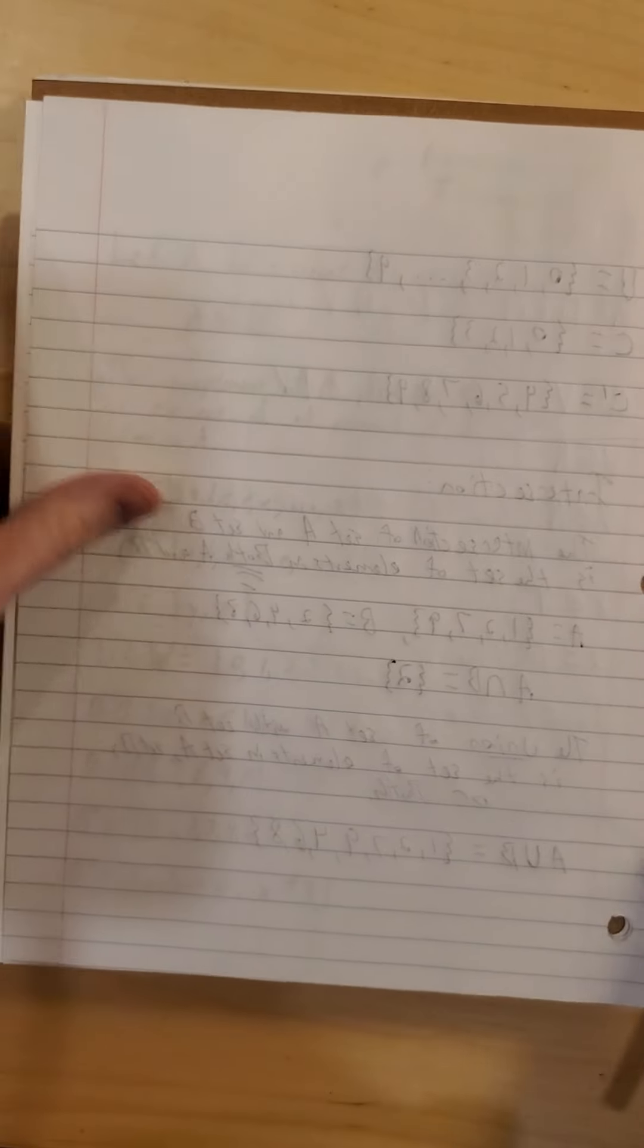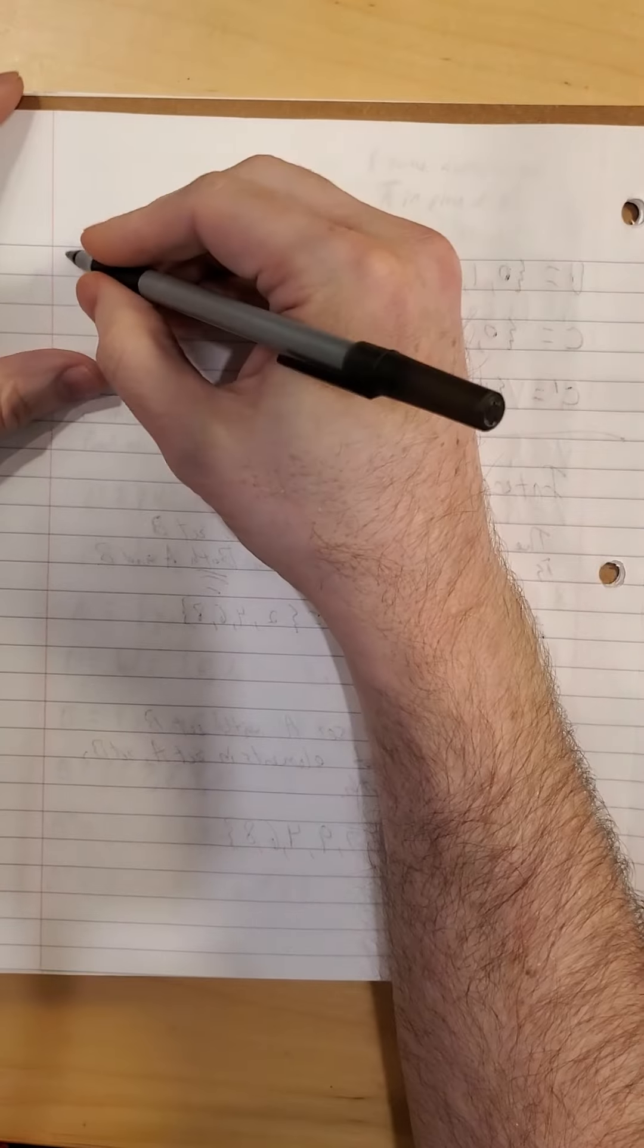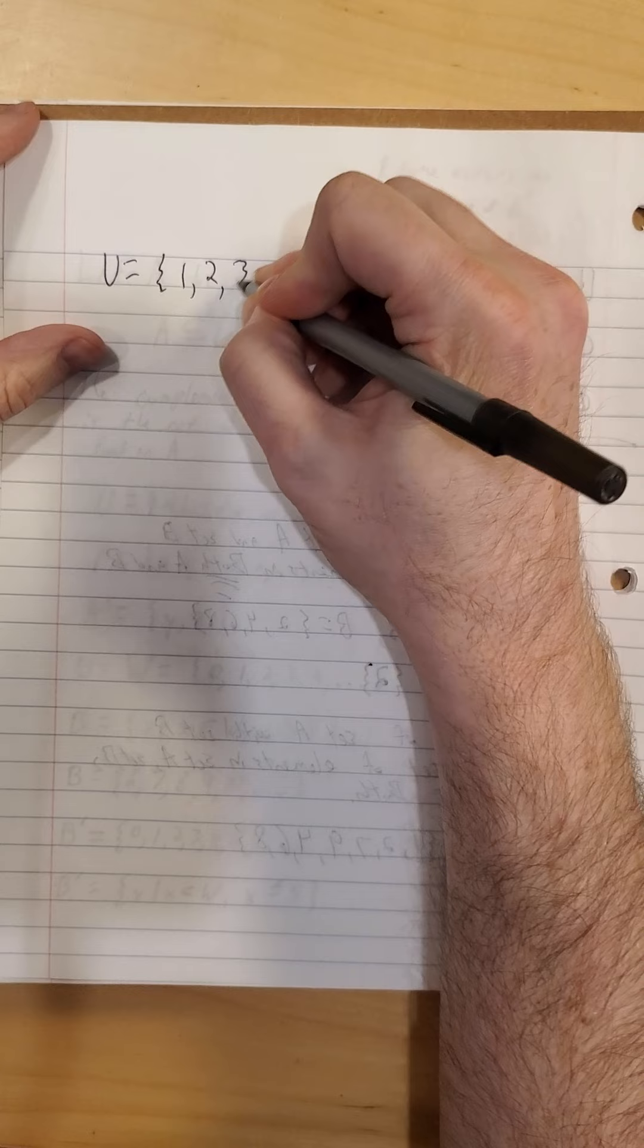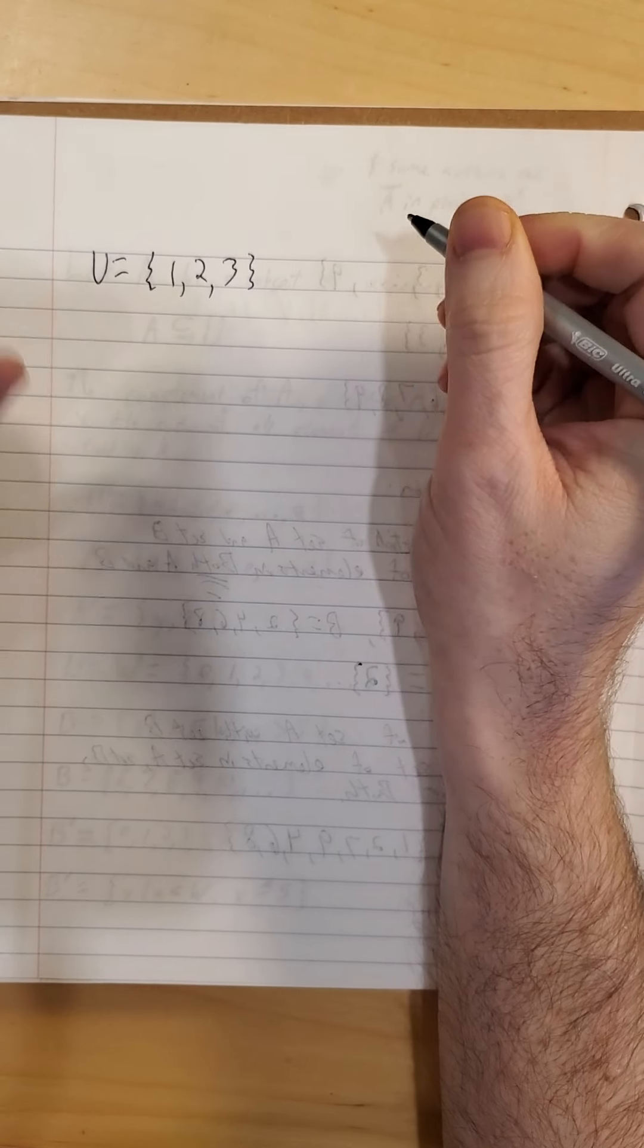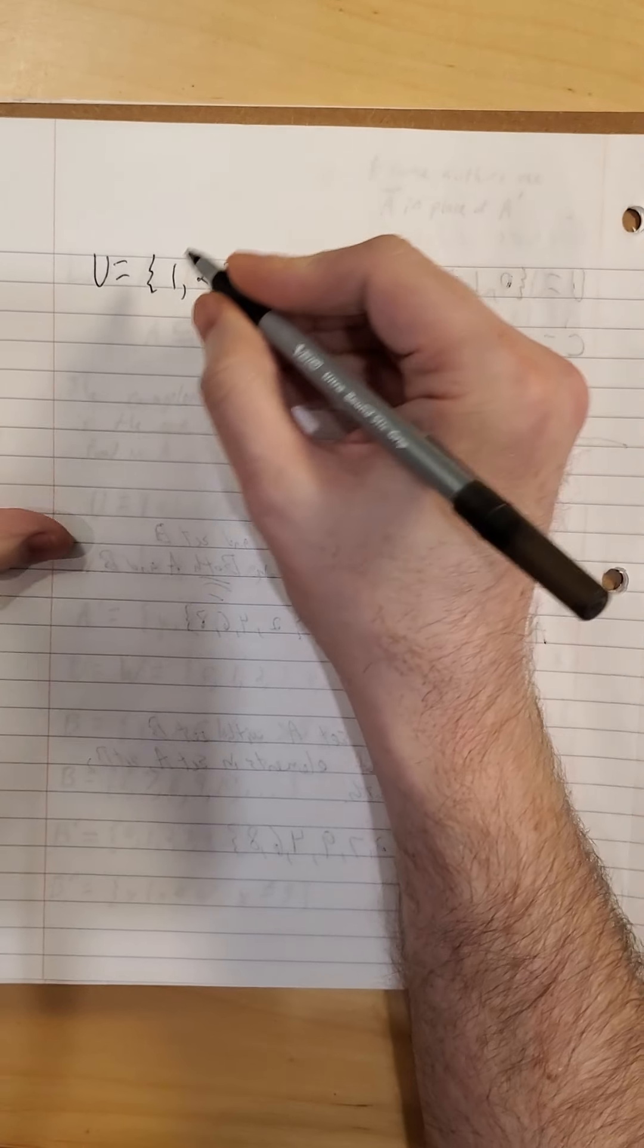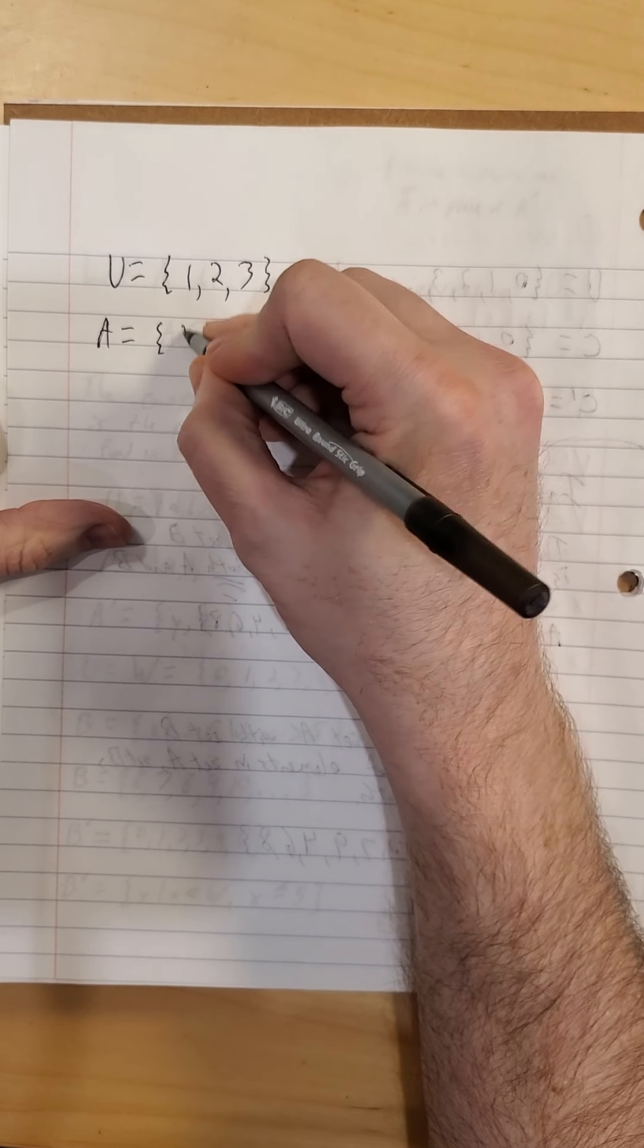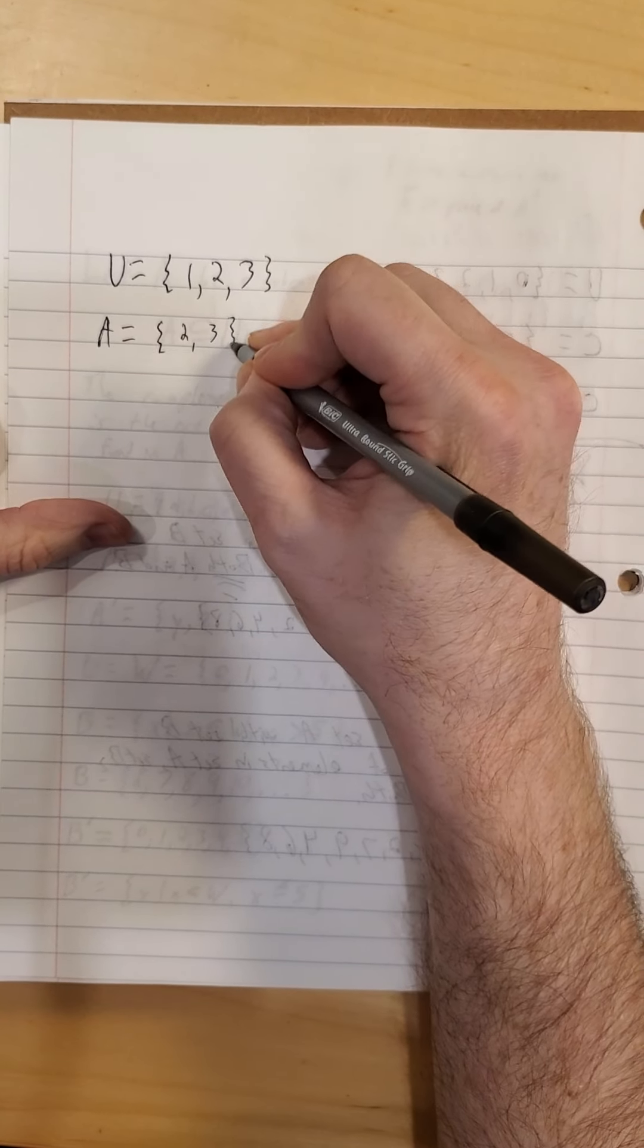All right, one more short example. Our universal set for this next example. Now we'll keep it small. We'll go 1, 2, and 3.